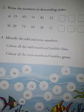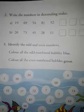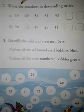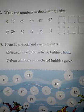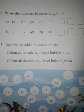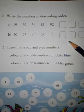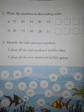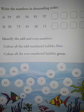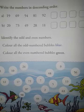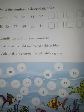Come to the next page. Question number 2: write the numbers in descending order. Descending order is just the opposite of ascending order. We arrange the numbers in ascending order from smaller to greater, and in descending order we arrange the numbers from greater to smaller. So first of all you write the greater number.